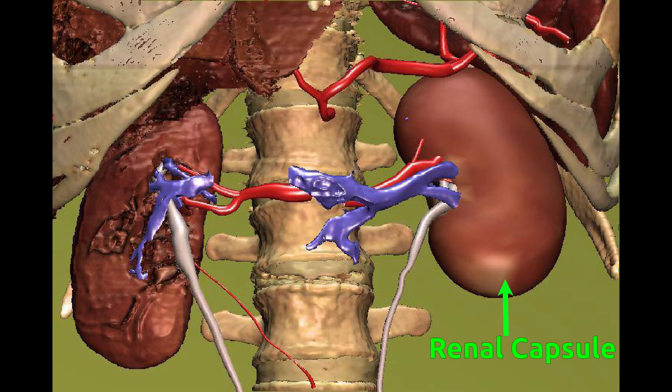A thin connective tissue known as the renal capsule surrounds each kidney. This capsule maintains the kidney's shape and protects the inner parts.